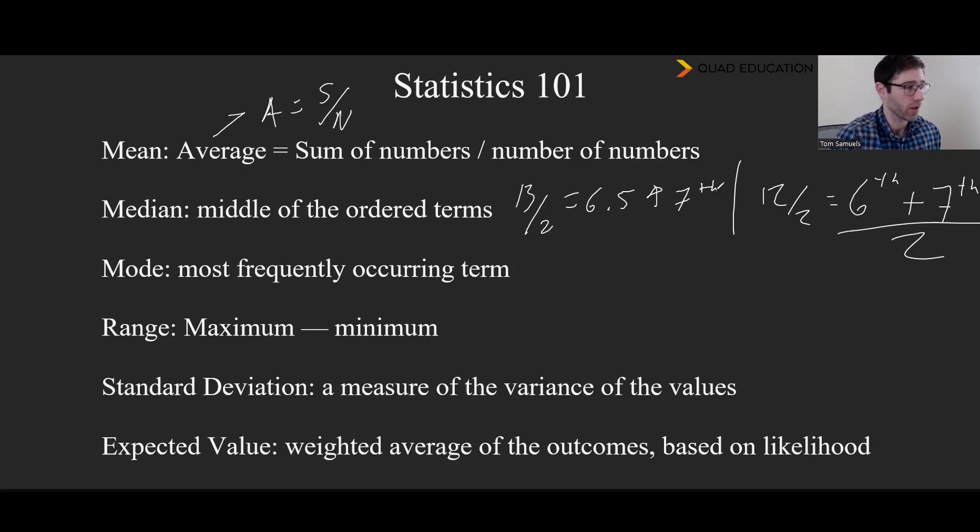And then if it was like negative 20, negative five, 60, 200, and 3000, that's a big standard deviation because all those numbers are all over the place with respect to wherever the average is, which would be someplace between like zero and 3000. So that's all standard deviation means. It sounds complicated, but it's just like how much variation is there within the numbers in the set.